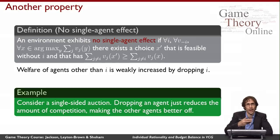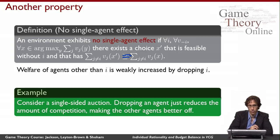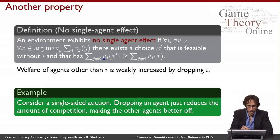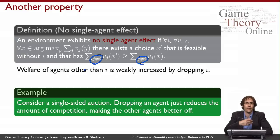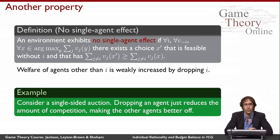Consider a single-sided auction where I have one good for sale. The choices are all the different agents I could give the good to. If I drop an agent, either that agent wasn't winning the auction before — in which case the social welfare maximizing outcome remains the same and nothing changes — or that agent was winning before, and then I pick a different winner once they've been dropped. The other agents are all happier when i has been dropped because one of them now gets to win. So this is a pretty natural property.